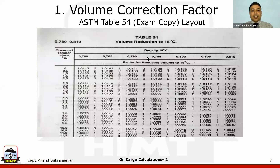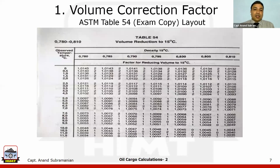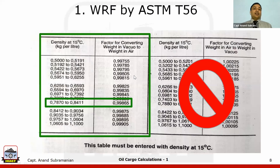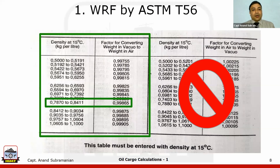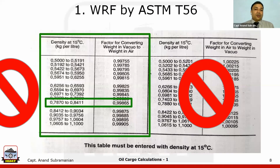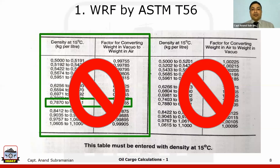We use ASTM Table 54 — T54 for short — entering it with the observed temperature and density at 15 degrees Celsius, which is provided by the cargo surveyor and can be found in the bill of lading, quality certificate, or certificate of analysis. The density is in vacuum at 15 degrees Celsius. We also have Table 56 — the weight reduction factor — but in practice, we can get our answers using only Table 54.